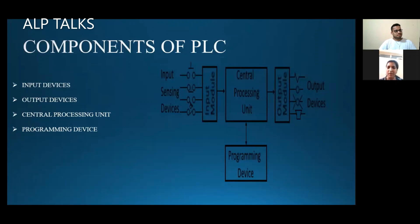The components of a PLC are divided into four parts: input devices, output devices, central processing unit, and programming device. Input devices are things connected on the input side — like switches and sensors — through which we give input. Output devices are things on which we need to act — like a motor or fan — whatever we want to start or stop.